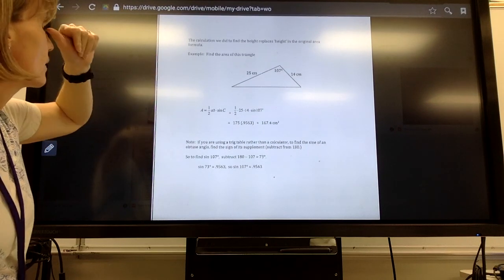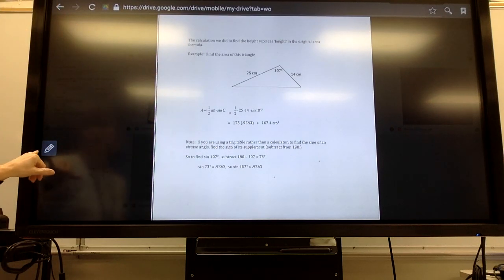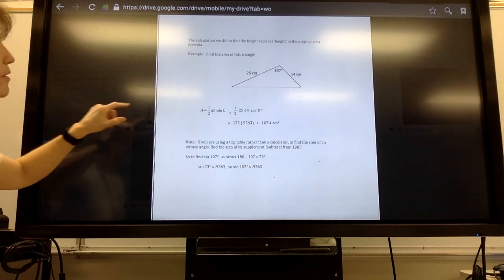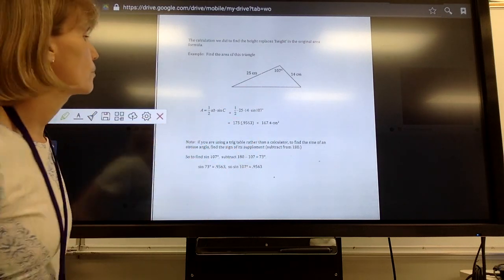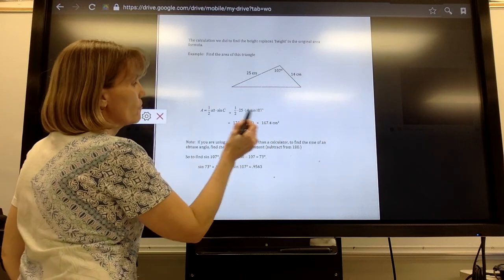So the calculation we did to find the height replaces the height in the original formula. For example, we can find the area of this triangle without finding the height. We can use my formula.